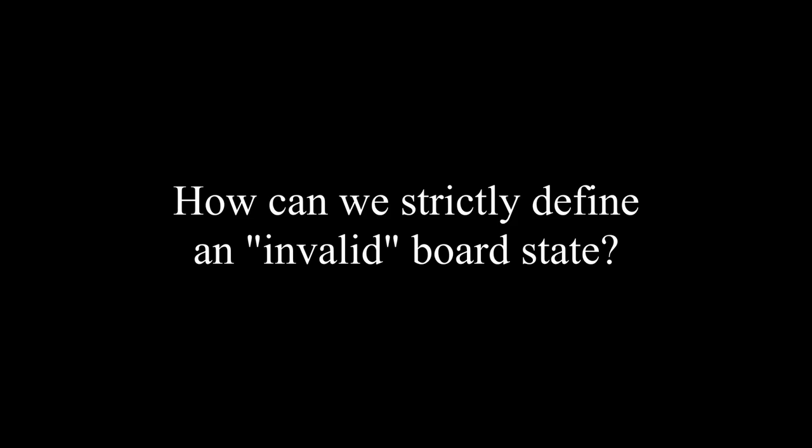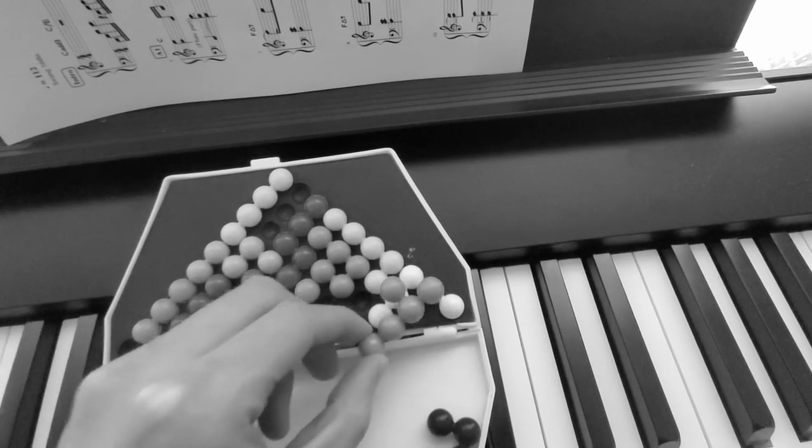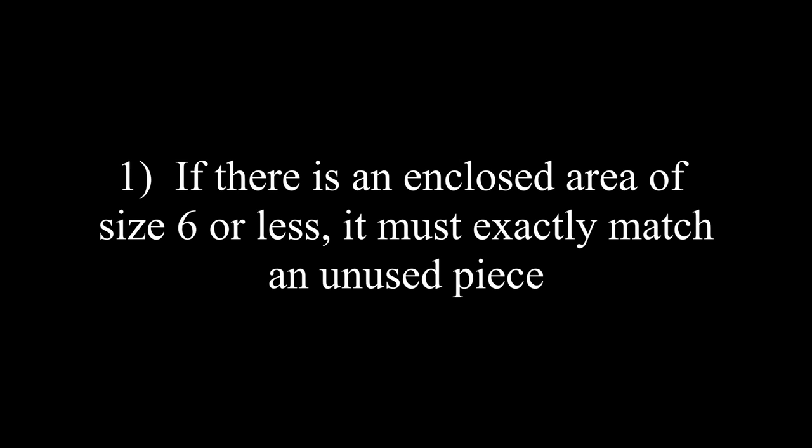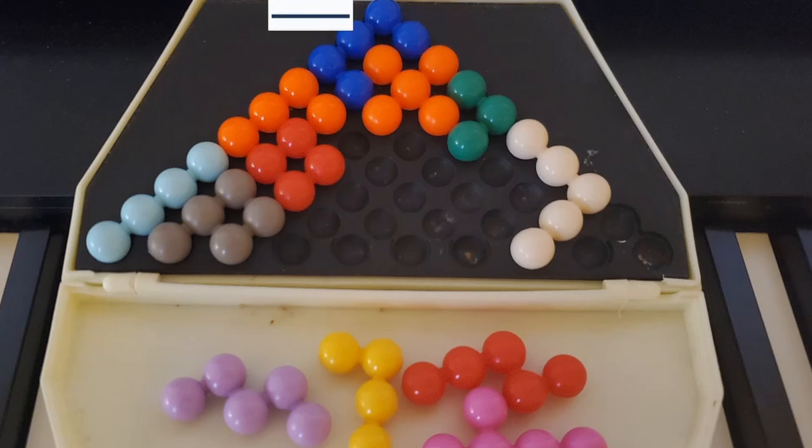So how do we check if a board is invalid? Well, certainly a board is invalid if we can't place any of our pieces on it, but we can do much better. I've implemented two easy ways. First, enclosed areas of size 6 or less must exactly match an unused piece. We have an enclosed area here of size 3, which matches that small green V piece. Unfortunately, since we've already used it, this board isn't valid.